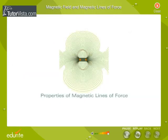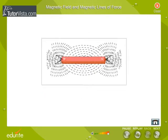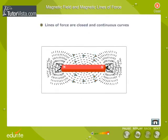Properties of magnetic lines of force. Let us now summarize the properties of lines of force. They are closed and continuous curves.